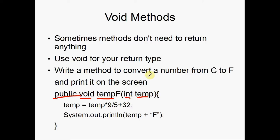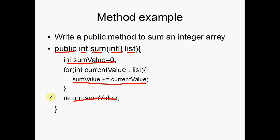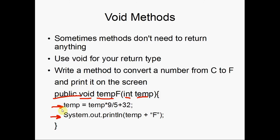This method converts the number from Celsius to Fahrenheit, and prints it on the screen. So, we do the conversion here, and we print it on the screen here. Notice that we're not returning anything, like we did in the last example, when we returned the sum value. So, no return in this example, because we're using a void return type.